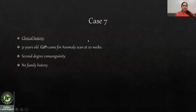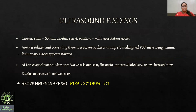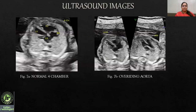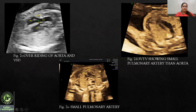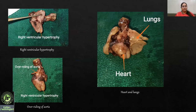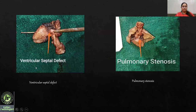Case 7: A 31-year-old G2P1 came for an anomaly scan with second-degree consanguinity and no family history. Situs was normal. There was septo-aortic discontinuity measuring 5.4 mm with the aorta dilated and overriding. Three-vessel trachea view showed the aorta appearing dilated with forward flow. The four-chamber view confirmed atrioventricular concordance. The five-chamber view showed septo-aortic discontinuity, and the pulmonary artery appeared very narrow compared to the aorta. This confirmed the diagnosis of tetralogy of Fallot. Autopsy confirmed overriding of the aorta, ventricular septal defect, and a small pulmonary vessel indicating pulmonary stenosis.